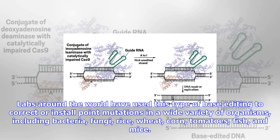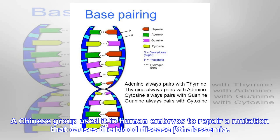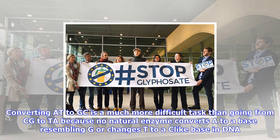Labs around the world have used this type of base editing to correct or install point mutations in a wide variety of organisms, including bacteria, fungi, rice, wheat, corn, tomatoes, fish, and mice. A Chinese group used it in human embryos to repair a mutation that causes the blood disease beta-thalassemia.